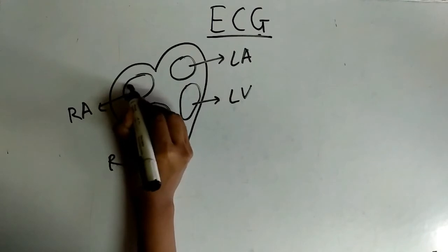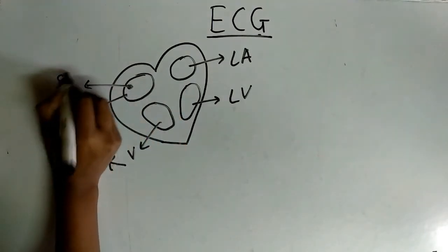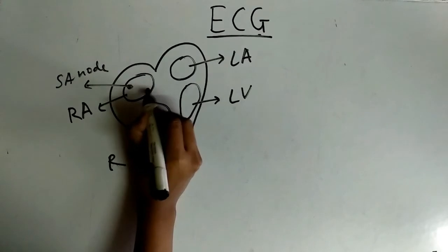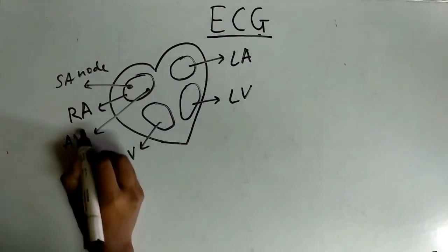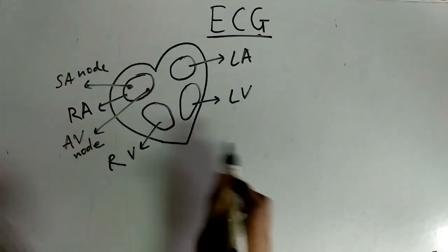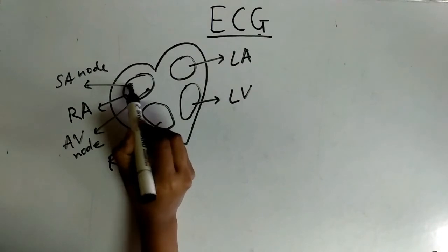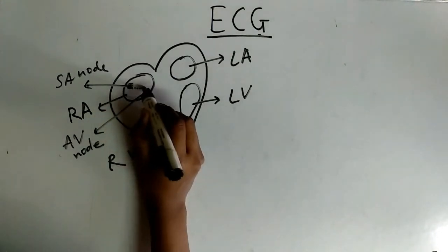Right atria consists of SA node. Here there is a SA node. This is AV node. The signals are generated in the SA node and these are passed to AV node.